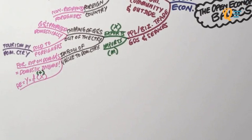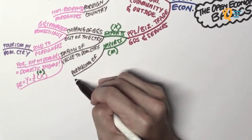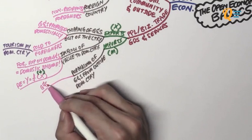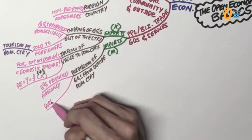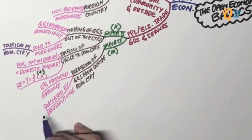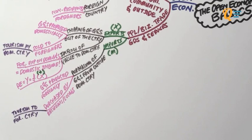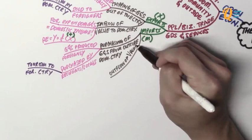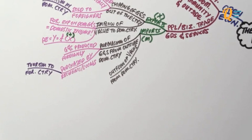What are imports? Imports refer to the purchasing of goods and services from outside of the domestic country. These are goods and services that are produced foreignly and are purchased by residents or locals, people of the home country. Imports also refer to domestic tourism to foreign countries. Whenever a resident or local person goes overseas to buy certain goods and services, that is considered as an import.